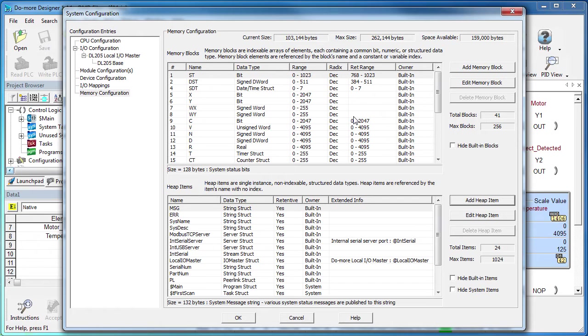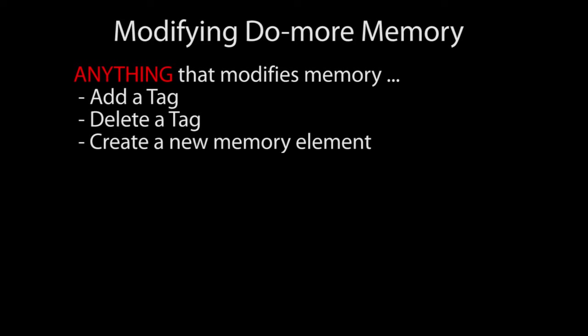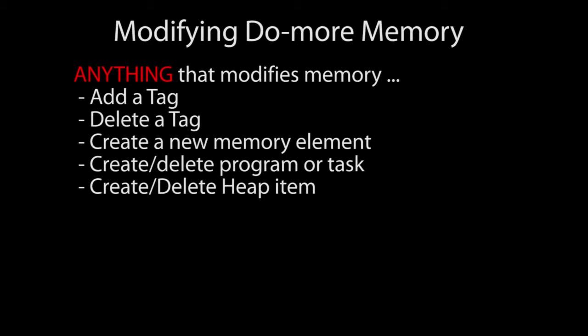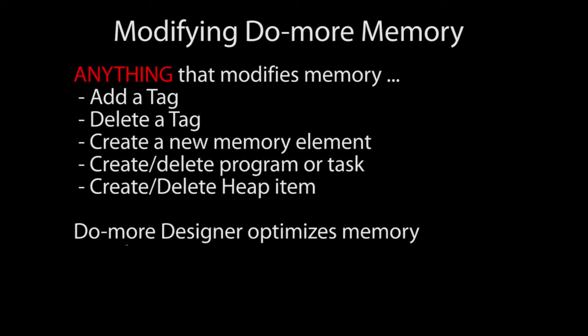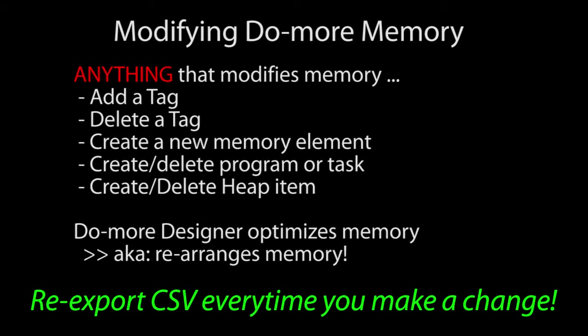But there are a couple of things you need to be acutely aware of before using tag integration with the Do More. First, each time you modify any portion of memory – add a tag, delete a tag, create a new memory element, create or delete a program or a task, add a heap item – anything that modifies memory – the Do More uses that as an opportunity to optimize memory usage, which means it moves everything around to best fit memory every time you make a change. So any time you make a change, whether Point of View is going to use it or not, make sure you re-export the CSV file, or Point of View may not be able to find what it's looking for because there's no guarantee that the memory element will be at the same address as it was before.